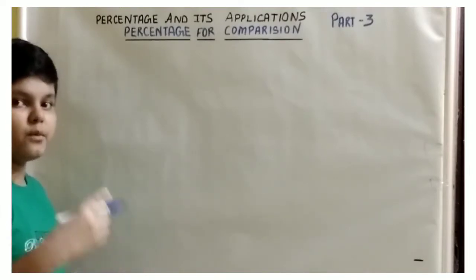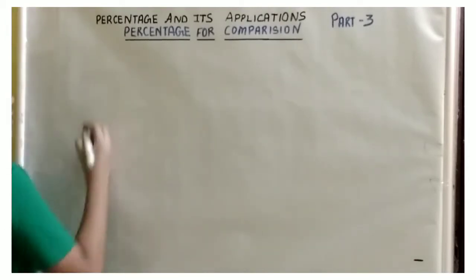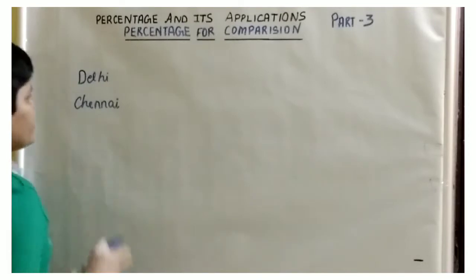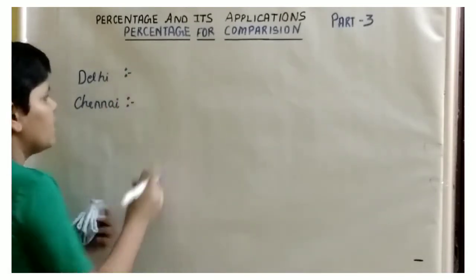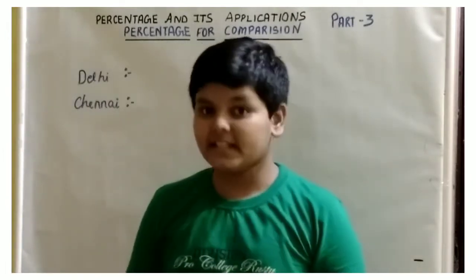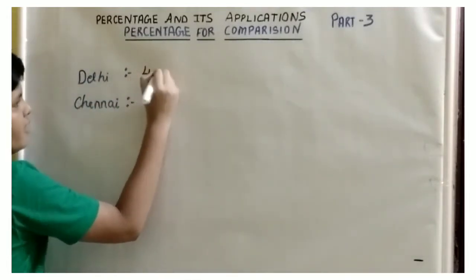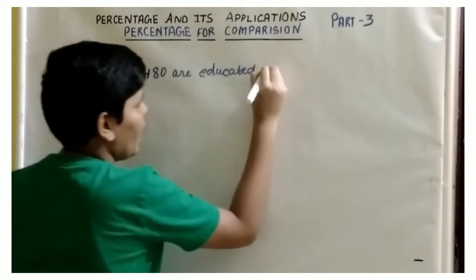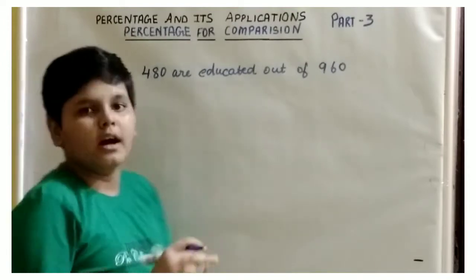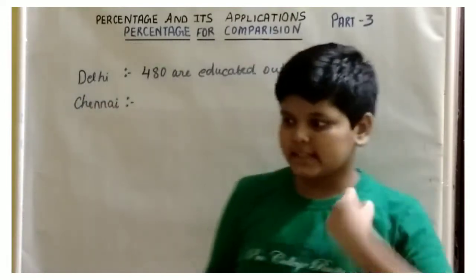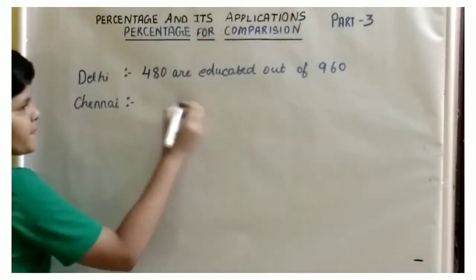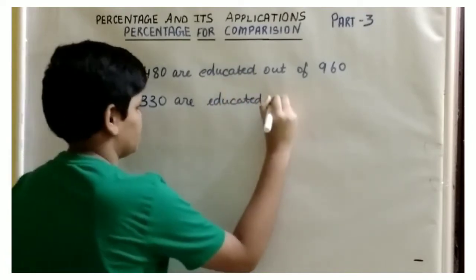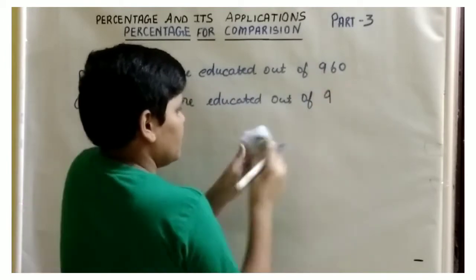Let us take two cities: Delhi and Chennai. In Delhi, there are a total of 960 women, out of which 480 are educated. And in Chennai, out of 550 women, 330 are educated.